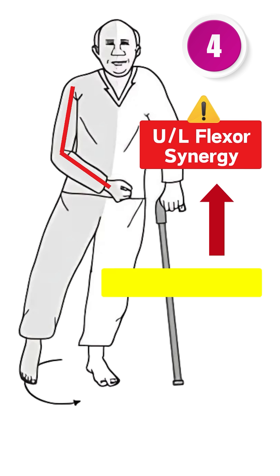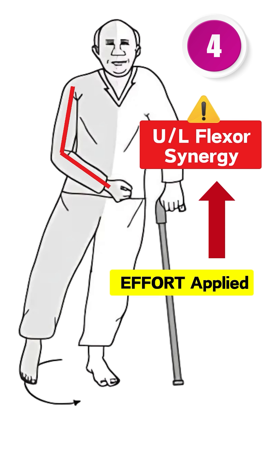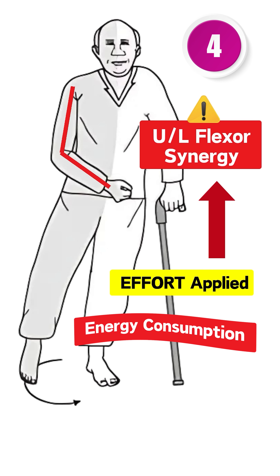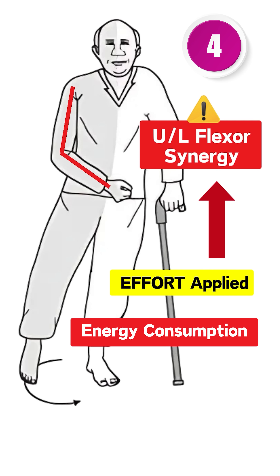The fourth reason is that whenever the patient applies effort for walking, upper limb flexor synergy is also activated at the same time. This results in energy consumption, and less effort is generated at the lower limb.